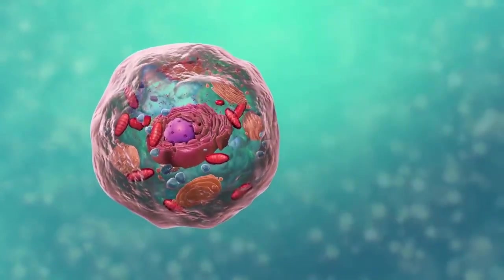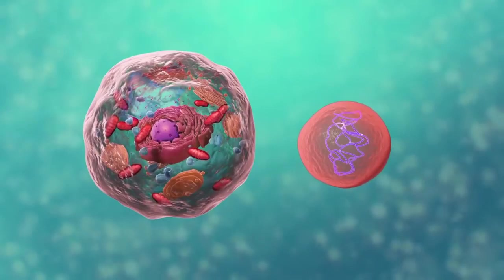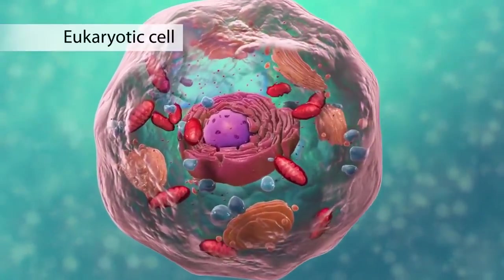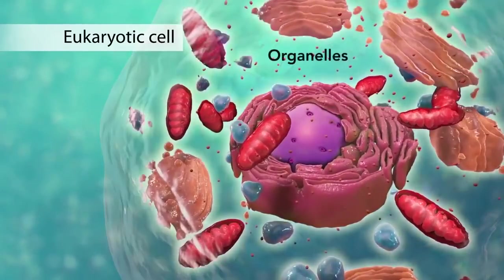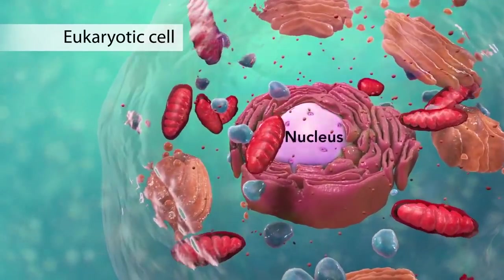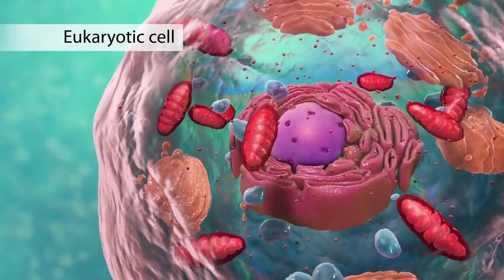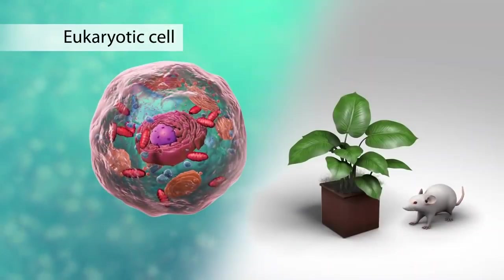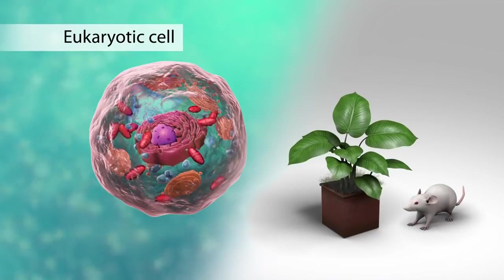There are two broad categories of cells. The first category is eukaryotic cells. They have organelles which include the nucleus and other special parts. Eukaryotic cells are more advanced complex cells such as those found in plants and animals.